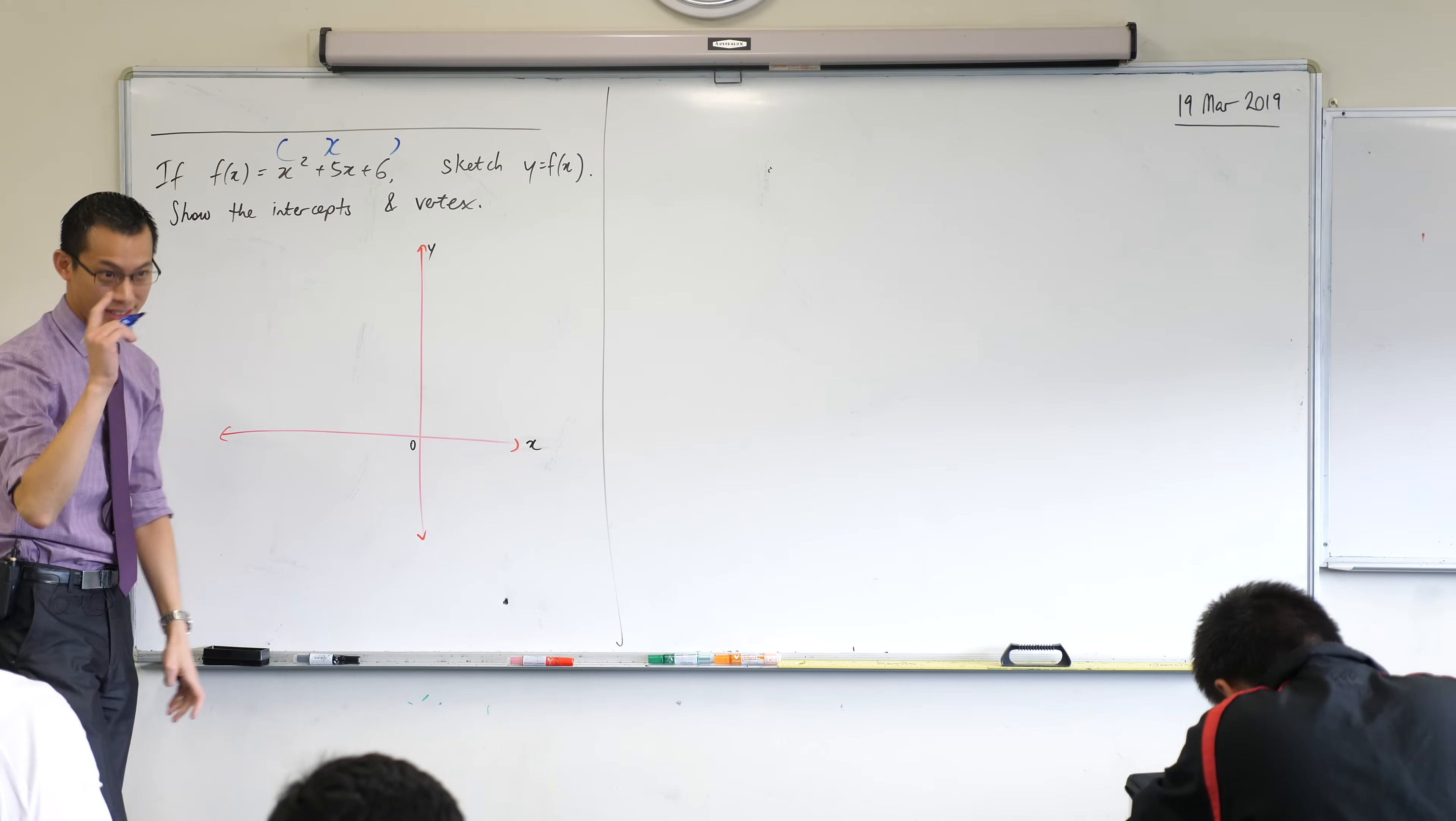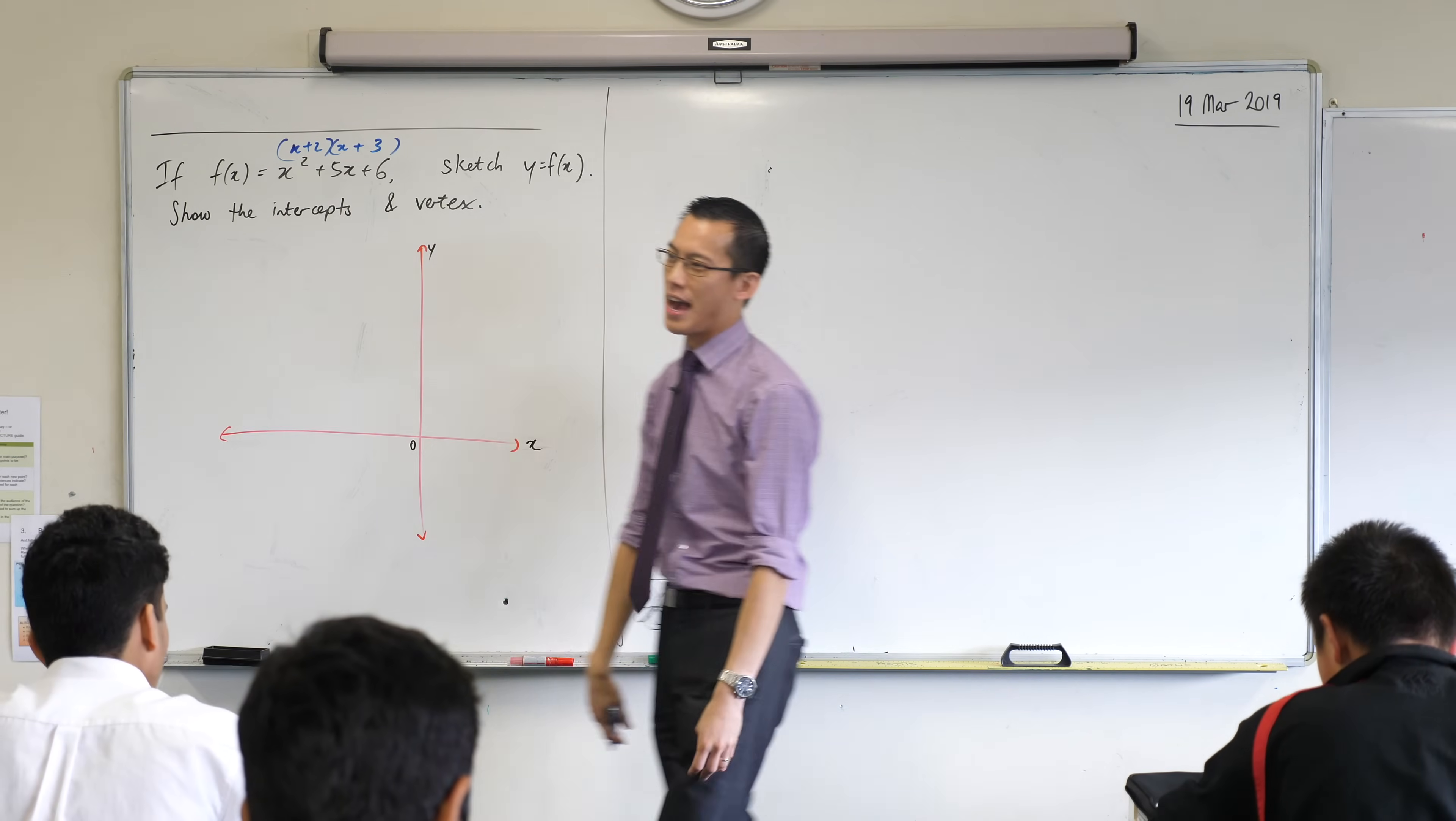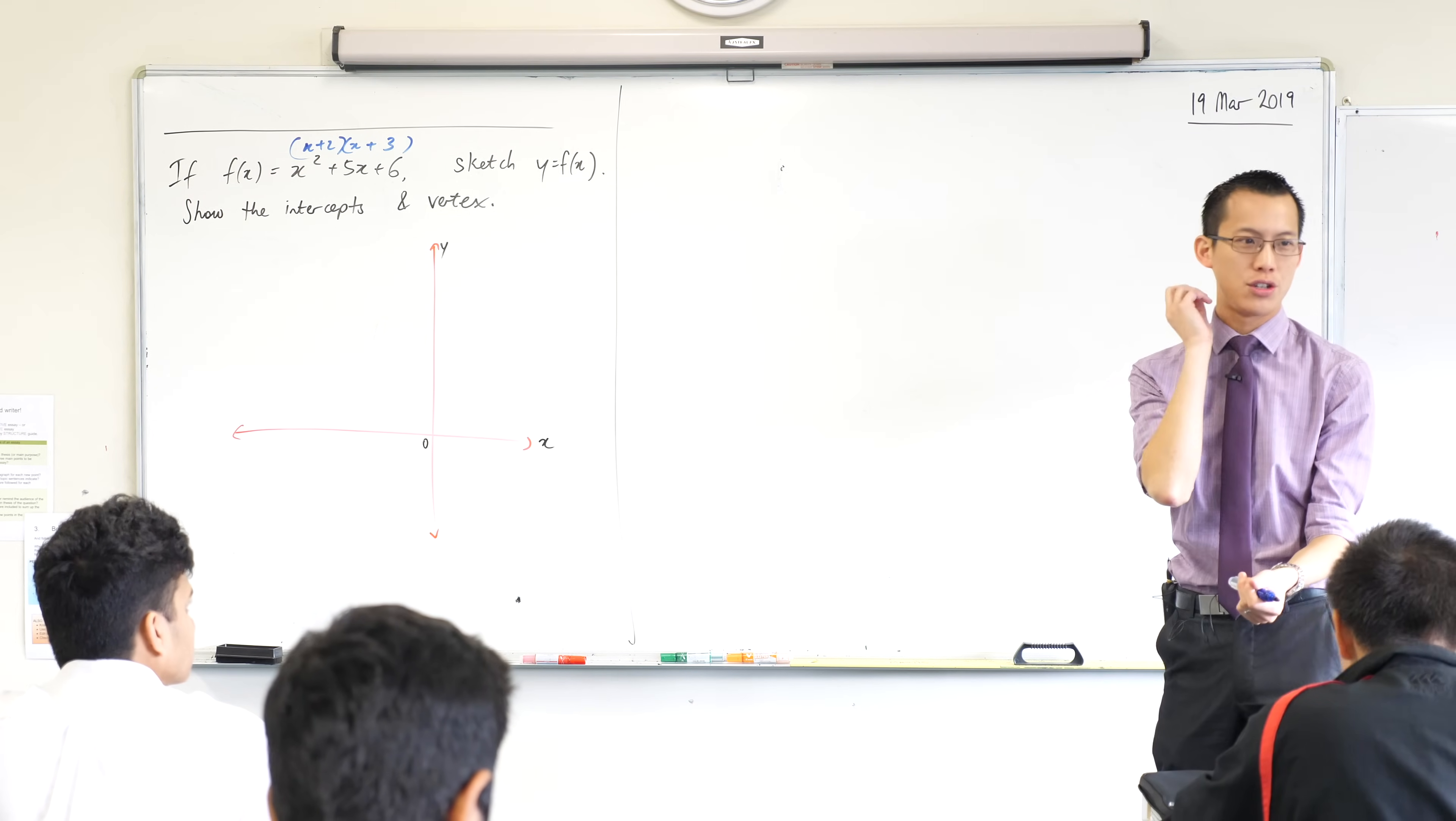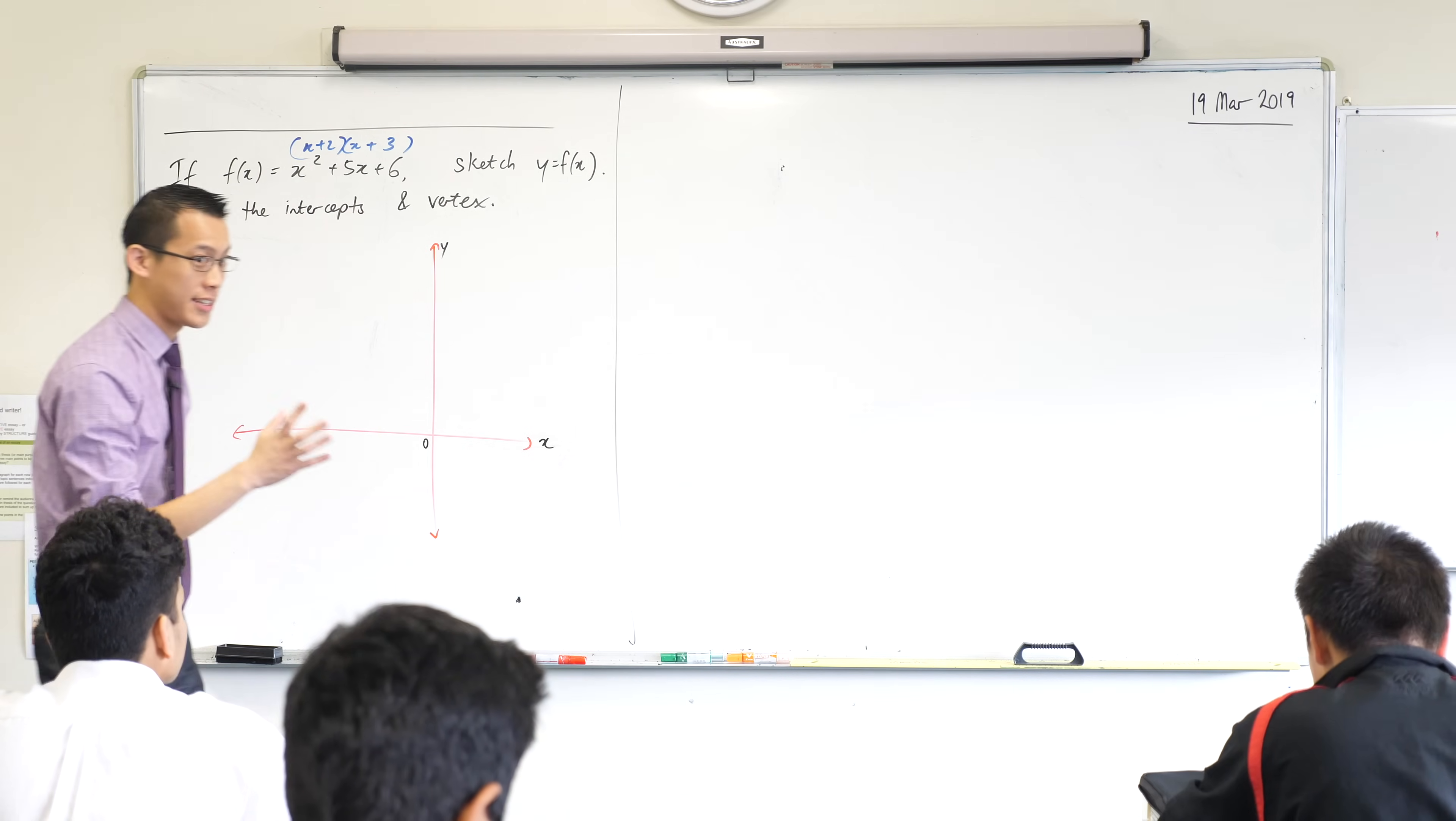The factorization is x plus 2, x plus 3. You've got to be able to do that reflexively. This is that part of the math syllabus we call fluency. Just like you're fluent in language, you don't need to look up words in a dictionary to say sentences that make sense. You should be able to do that without thinking, especially for an easy one like that.